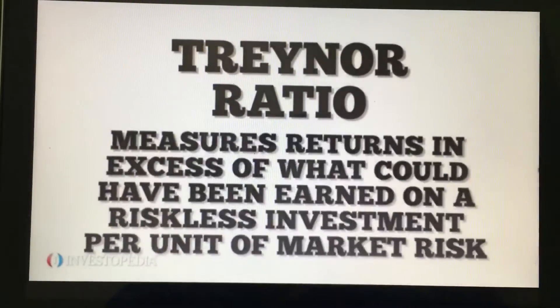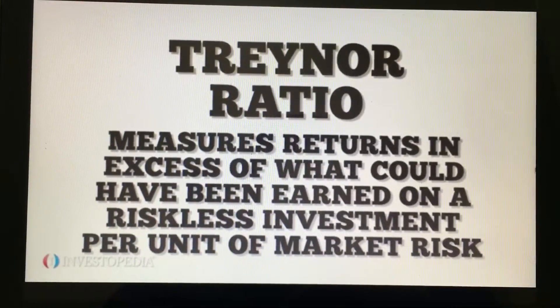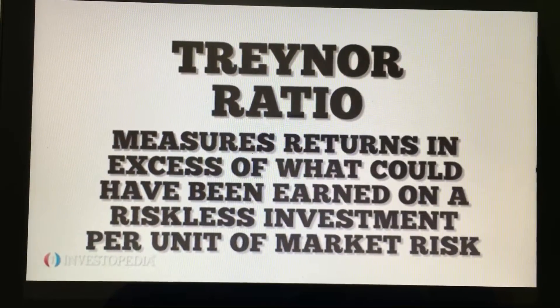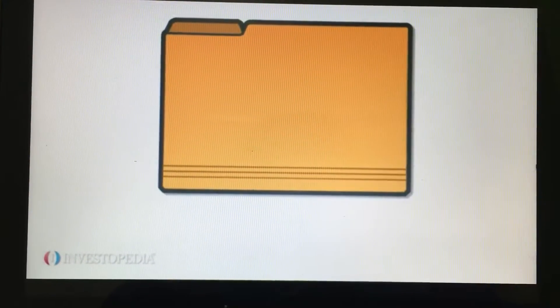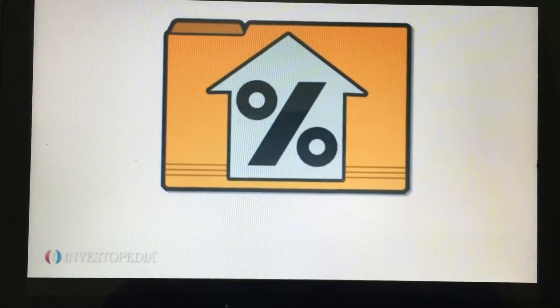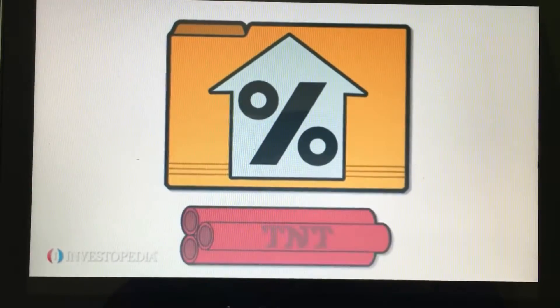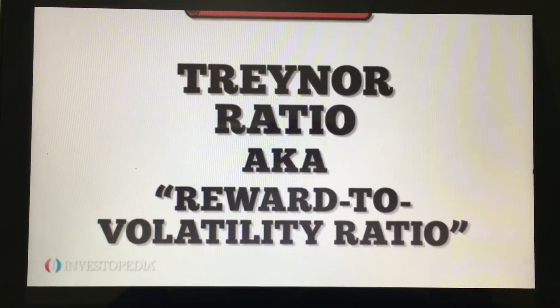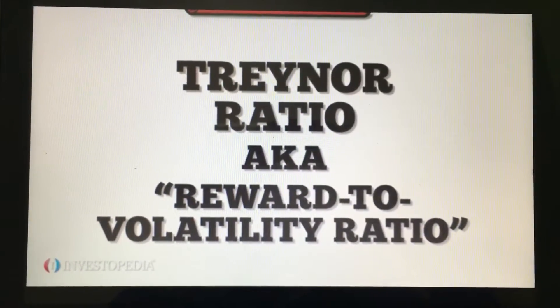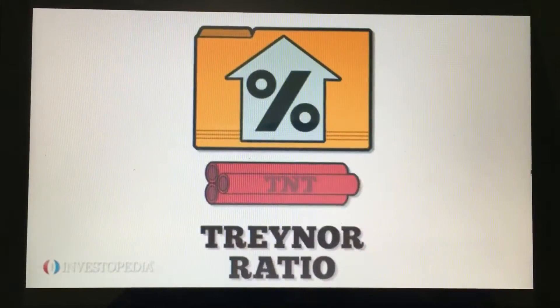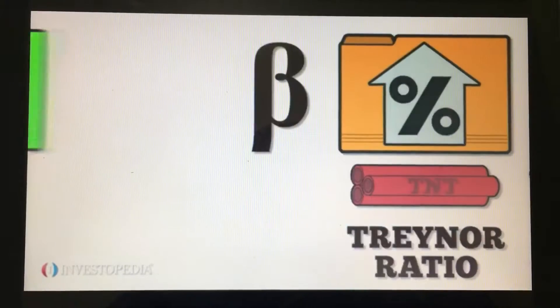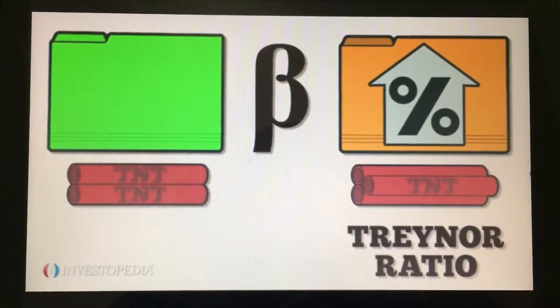The Treynor ratio measures returns in excess of what could have been earned on a riskless investment per unit of market risk. Developed by Jack Treynor, the ratio enables investors to gauge their portfolios not only by returns but also by the risk they took to achieve those returns. It's also called the reward-to-volatility ratio. It's similar to the Sharpe ratio but uses beta to measure volatility.